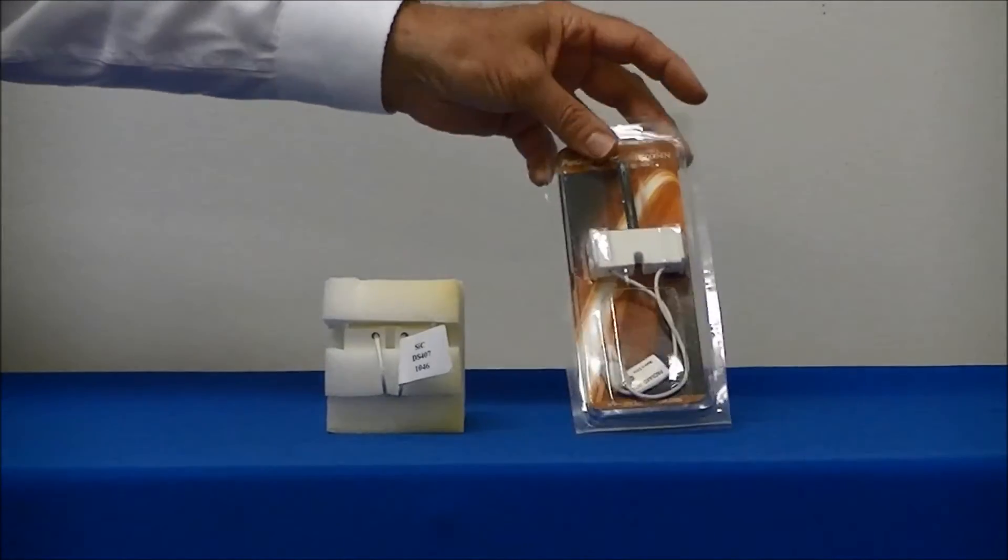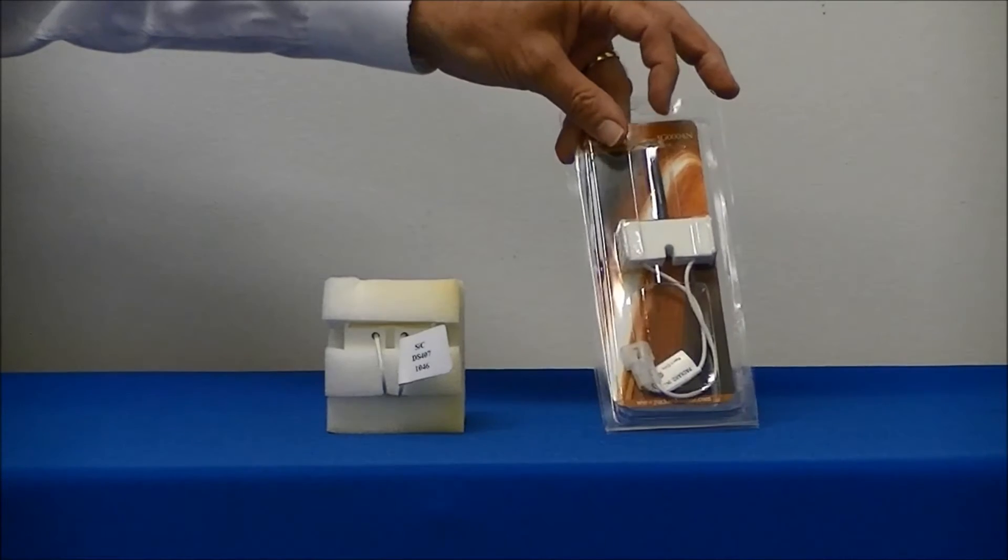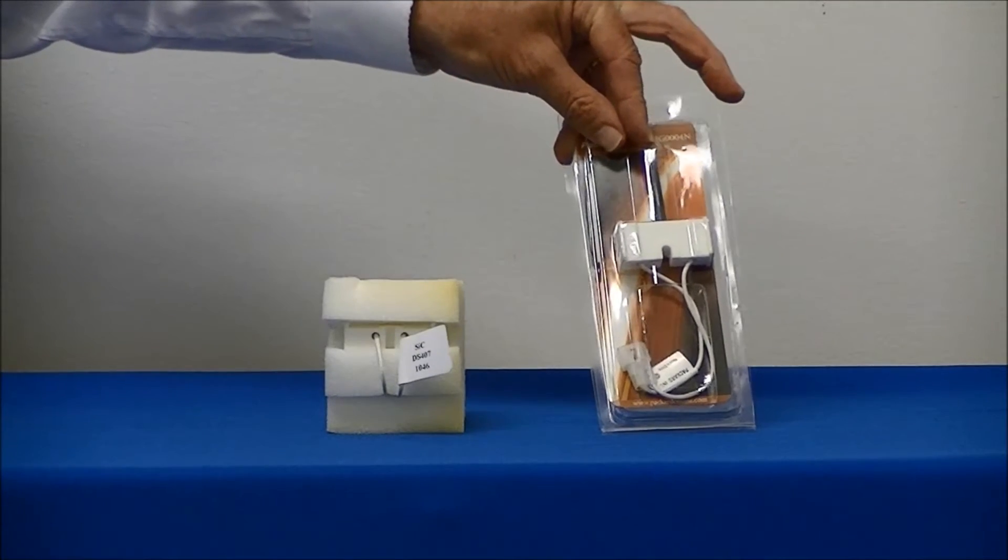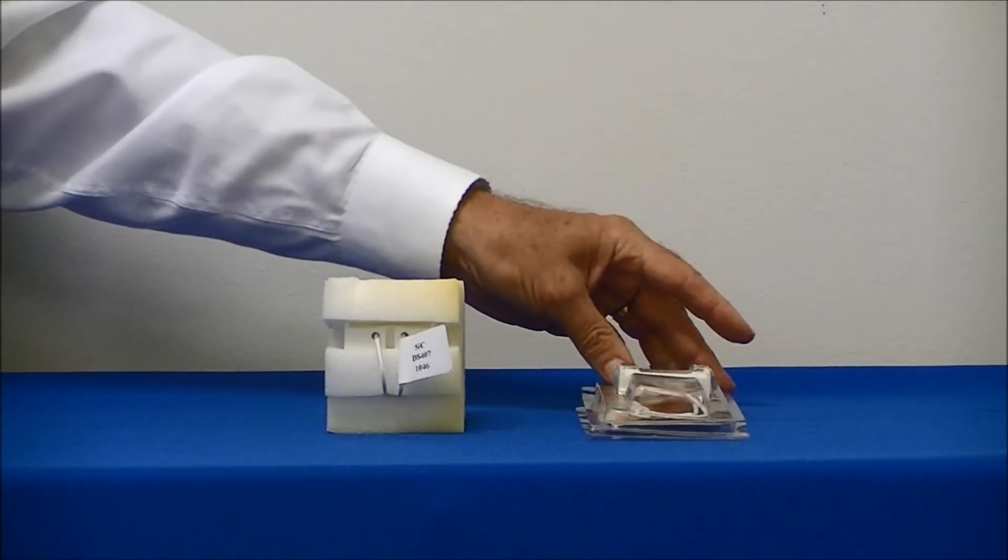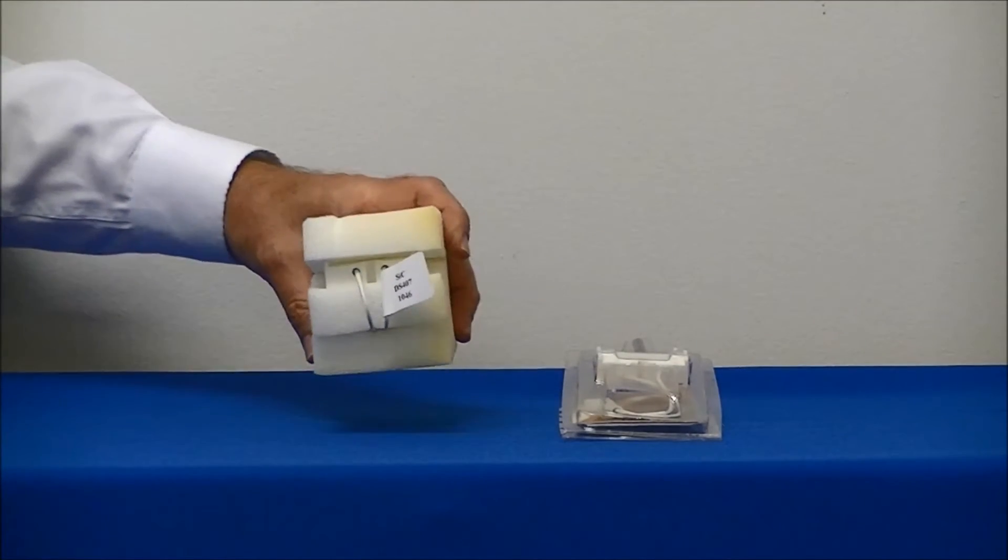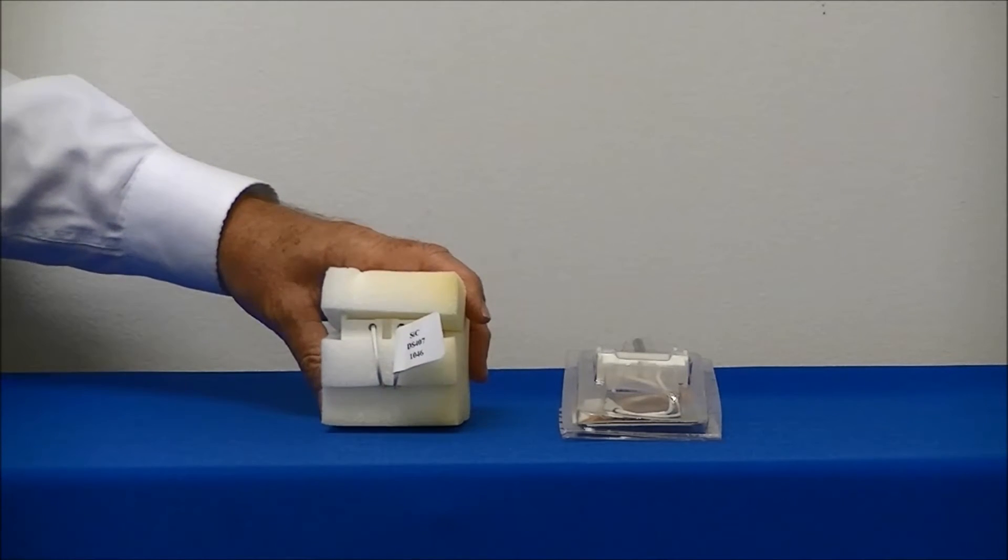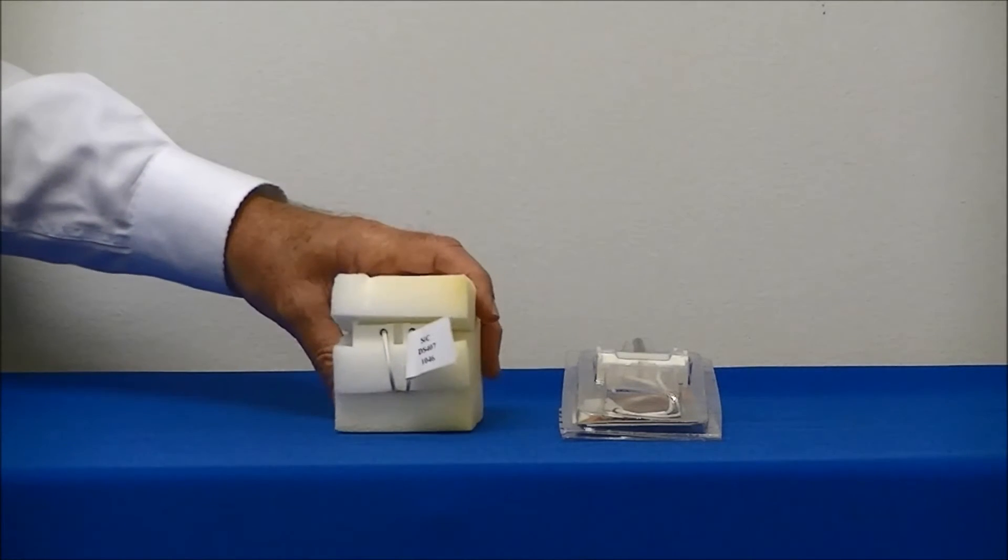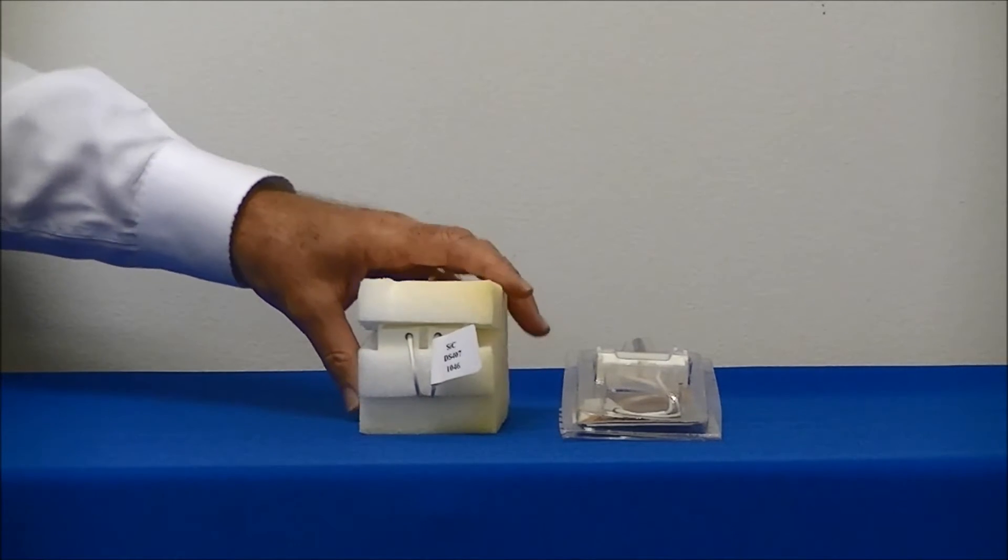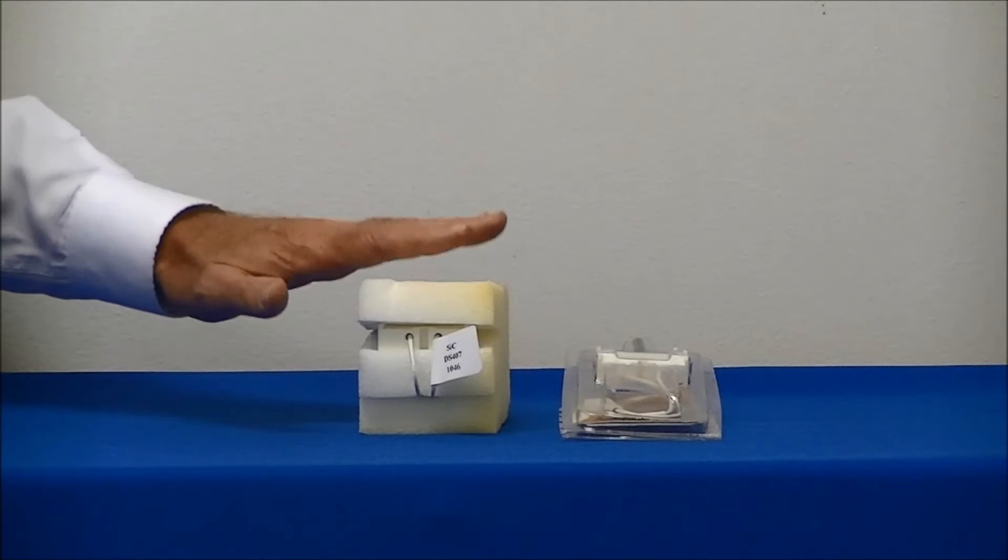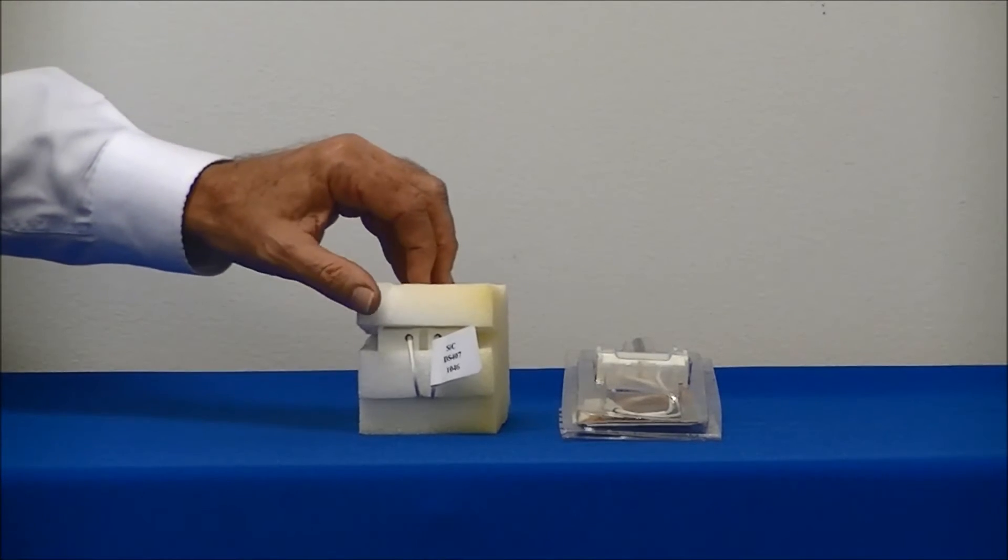You'll notice that there's a big difference in the packaging between these two igniters. This is a silicone nitride igniter. The igniter in this packaging is a silicone carbide. The carbide igniter is packaged in foam because it is fragile. It can easily be broken if handled improperly.